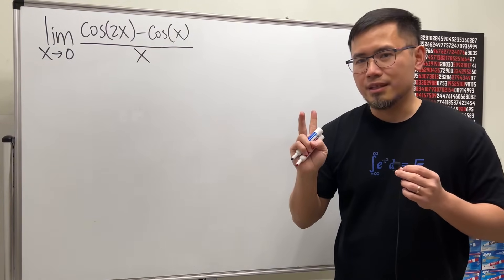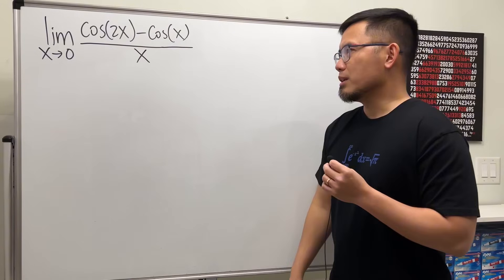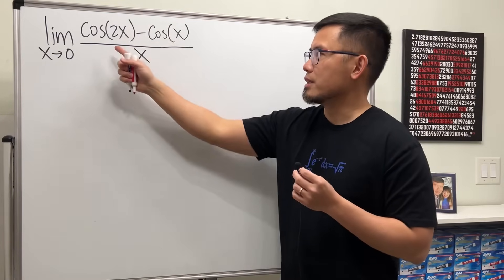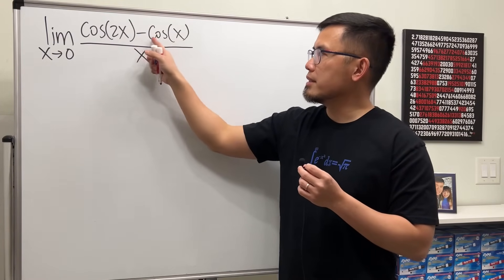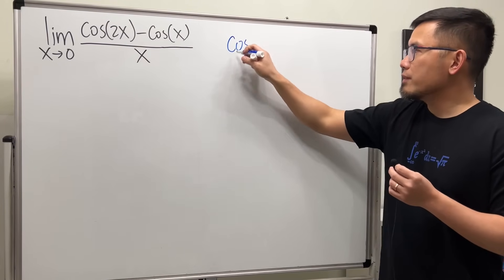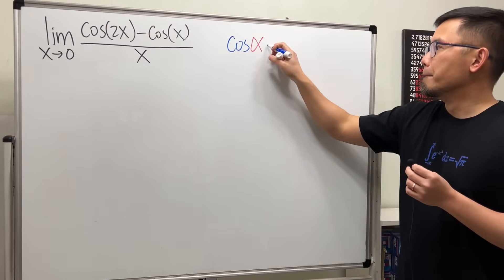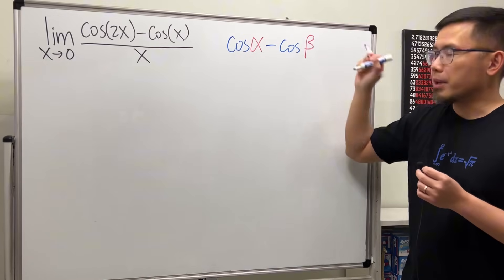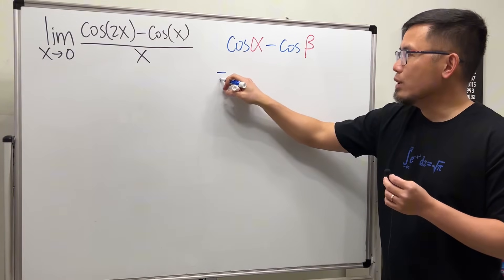Again, no L'Hôpital's rule, but we can use trig identities and trig limits. The most direct way to use trig identities for this one is cosine of an angle minus cosine of another. Let me write that down right here for you. If we have cosine of an angle, that's alpha, minus cosine of another angle, that's beta, this equals...